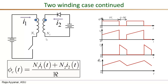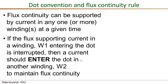We have just learned our very first isolated converter. The schematic shown here is similar to what we'll be studying in detail in later videos — it's called the flyback converter — with small changes: instead of a battery on the secondary side, it will actually have a capacitor and a load. What we have established so far is that flux continuity is required, and this flux continuity can be supported by current in any one or multiple windings at a given time.